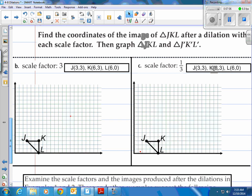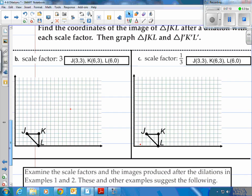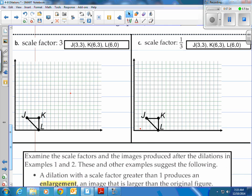Alright, you give it a shot here. I've actually created a couple for you. What it says to do is find the coordinates of the image of J-K-L after a dilation with each scale factor, then graph J-K-L and J-K-L prime. So you can watch me do these. I'm guessing you don't have graph paper, and I'll give you a worksheet in class to do when you get here with graph paper.